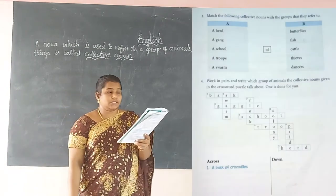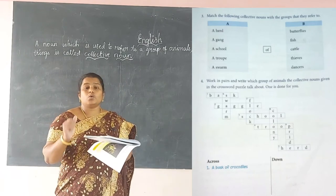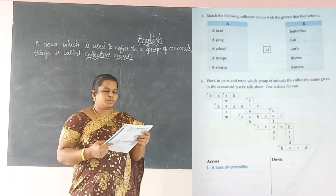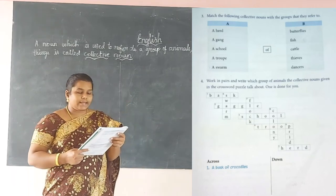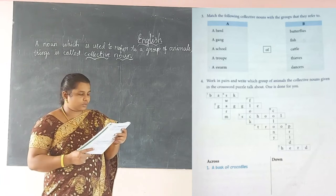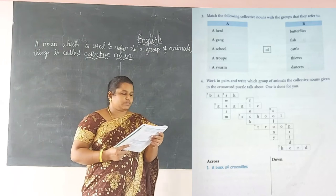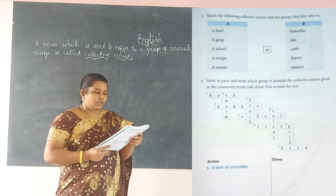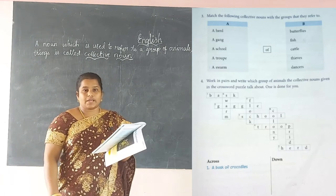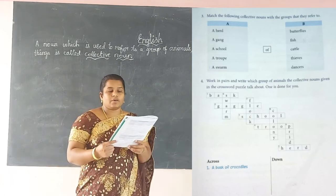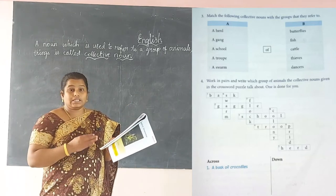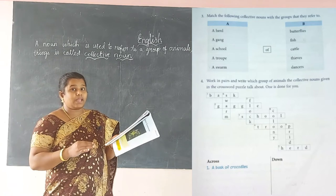This next exercise is very easy. Match the collective nouns: a herd — cattle; a gang — thieves; a school — fish; a troop — dancers; a swarm — butterflies. The answer order is 5, 3, 1, 2, 4. Now there is a crossword puzzle activity — this is like a puzzle game.